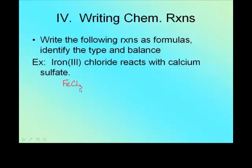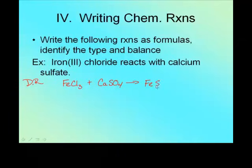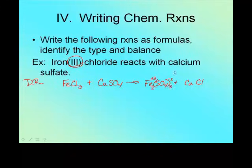Welcome back. Iron three chloride — FeCl₃ — plus calcium sulfate — CaSO₄. What type of reaction is this? Compound plus compound is double replacement. So I switch the first parts: FeSO₄ plus CaCl. Balance the charges: iron is plus three, sulfate is minus two, so it's Fe₂(SO₄)₃. Cross out the charge. Calcium is plus two, chlorine is minus one — CaCl₂. Balance it and draw my little line.